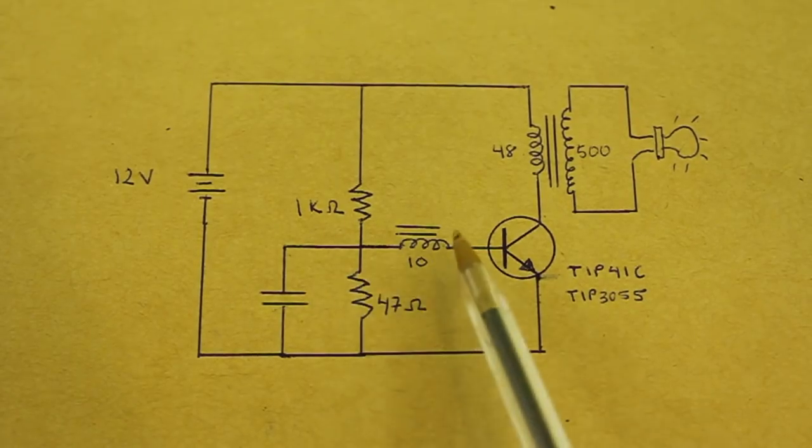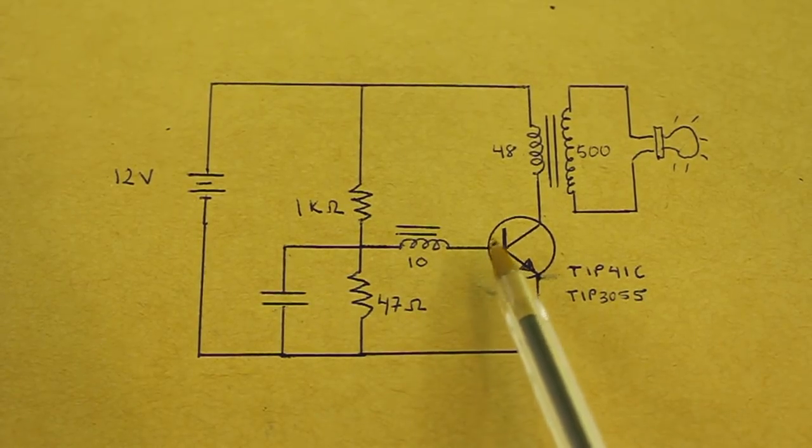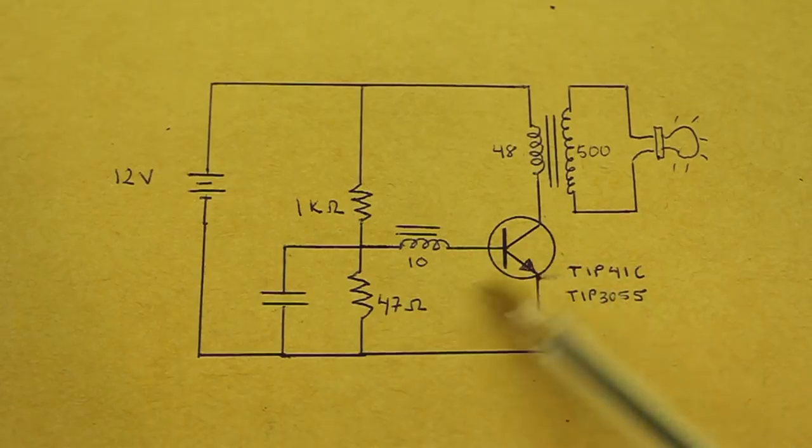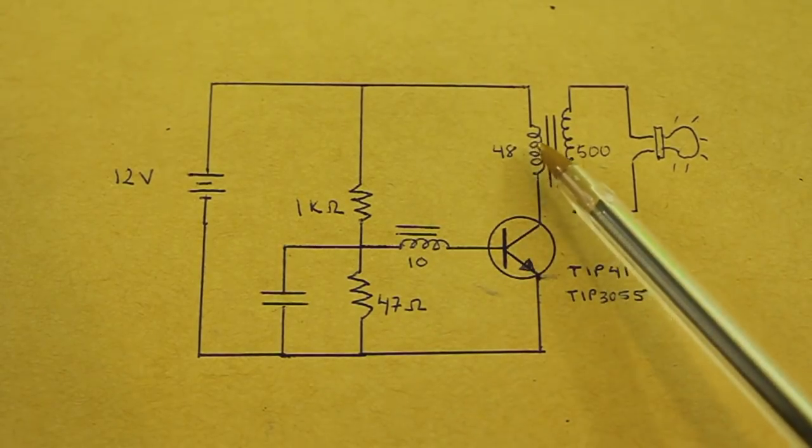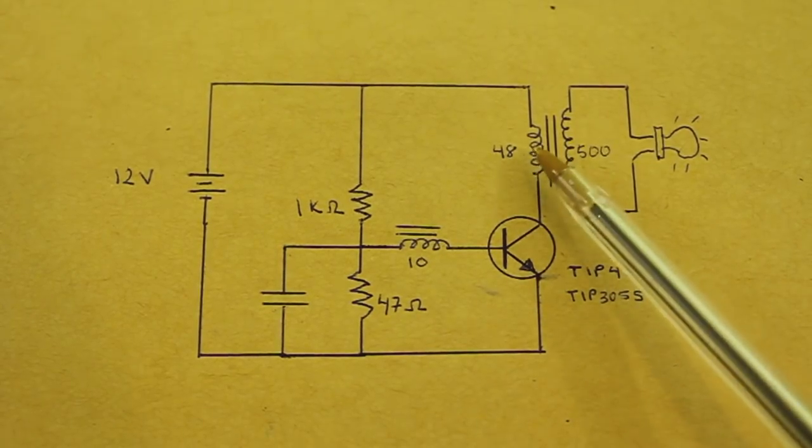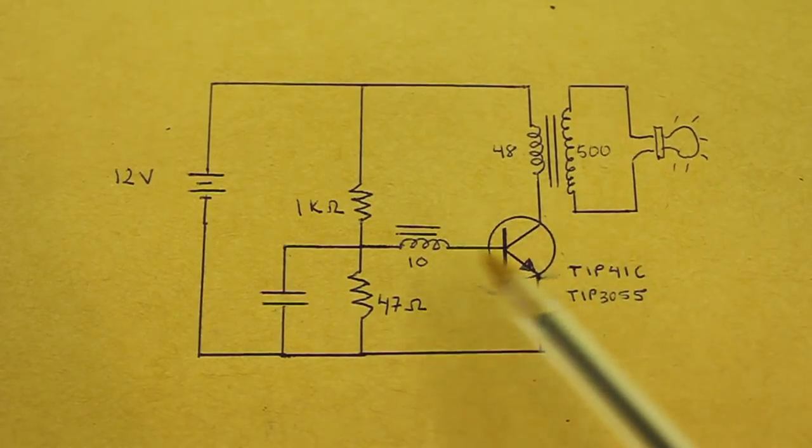This voltage turns the transistor even more and reinforces the magnetic field that continues to increase. It is a positive feedback.